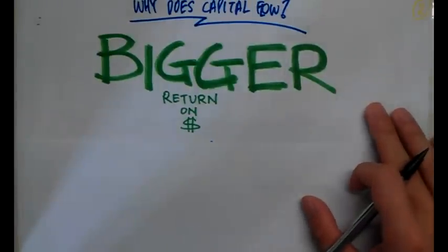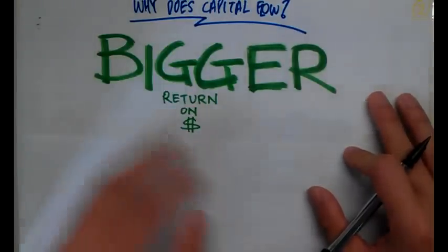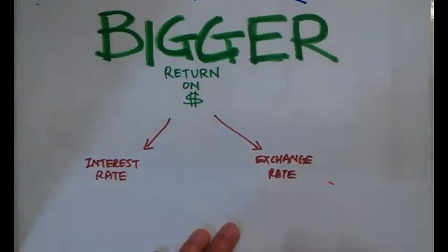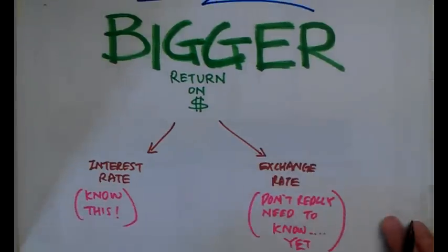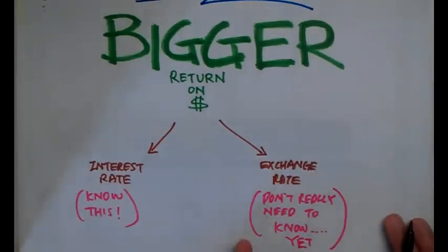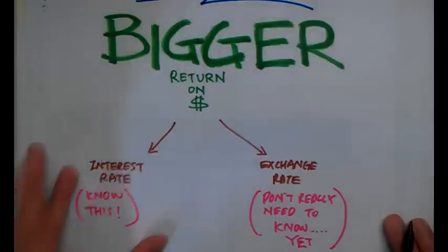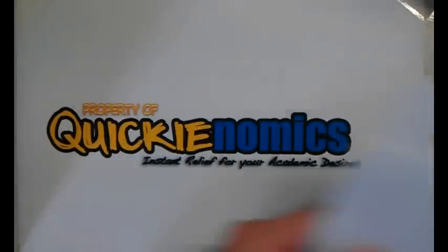People want to maximize their investments, so the bigger return another country offers, the more attractive it is. What determines the bigger return is either interest rates or exchange rates. For this syllabus, you only need to know about interest rates — exchange rates will be covered in year two macroeconomics. For today's tutorial, we'll just be talking about nominal interest rates.